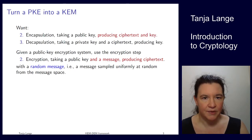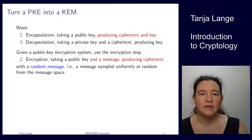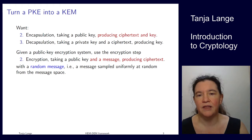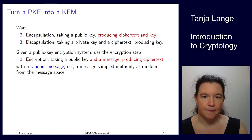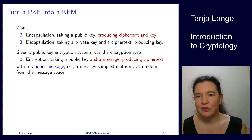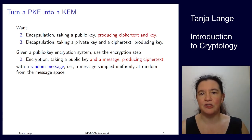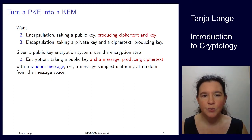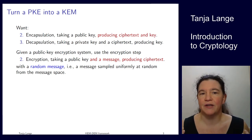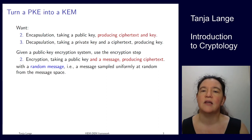If you have a public key encryption system and want to turn it into a KEM, the differences are that the encapsulation takes a public key and produces a ciphertext and a key, whereas the PKE takes a public key and a message and produces a ciphertext. The decapsulation must also produce a key. We can run the public key encryption system on a random message — for RSA, an integer sampled uniformly at random between 0 and n-1, or for ElGamal between 0 and p-1 — and encrypt that.